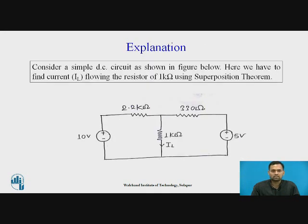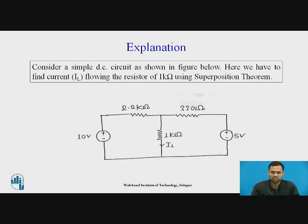Consider the simple DC circuit shown in this figure. The problem is to find out current IL flowing through the resistor of 1 kΩ, and for this we have to use Superposition Theorem.